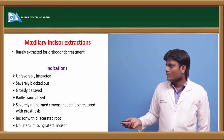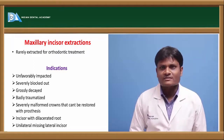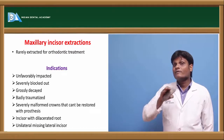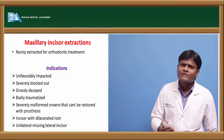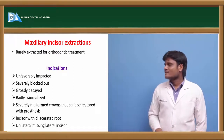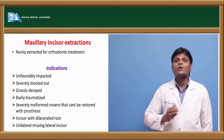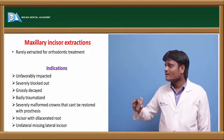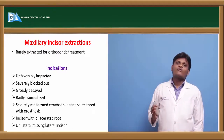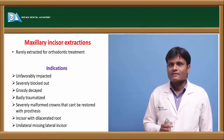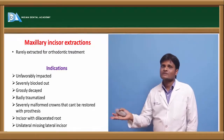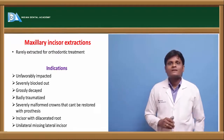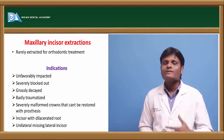Coming to maxillary incisor extractions, we will never extract maxillary incisors for orthodontic purpose. Even in very rare situations — when the maxillary incisor is unfavorably impacted, severely blocked out of the arch, grossly decayed, traumatized, or malformed — and in cases of unilateral missing lateral incisor, we may extract the maxillary incisor. The maxillary lateral incisor may be extracted on the other side as well, and then replaced bilaterally. In cases where the maxillary incisor has severely dilacerated roots, we will go for its extraction.